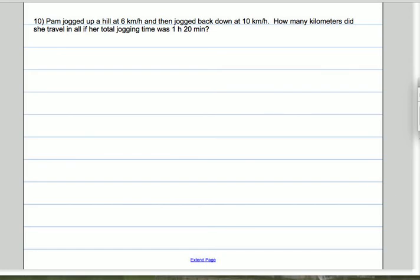This problem says Pam jogged up a hill at 6 kilometers per hour, then jogged back down at 10 kilometers per hour. How many kilometers did she travel in all if her total jogging time was 1 hour 20 minutes?